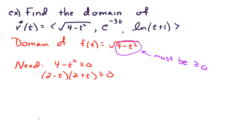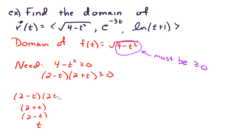So I'm going to write t, and then I'm going to write 2 minus t and 2 plus t. Then we'll figure out when the product of these factors is greater than or equal to zero. It can be hard to just figure it out off the top of your head, and sometimes students get the wrong answer that way. So I really do encourage you to write a sign chart here. The product equals zero when t equals 2 and t equals negative 2.